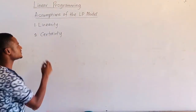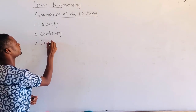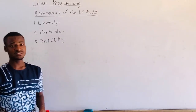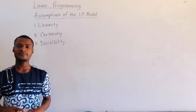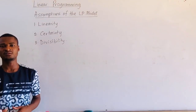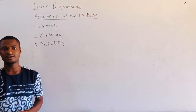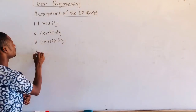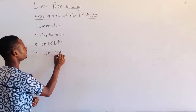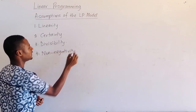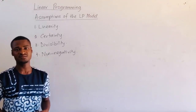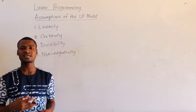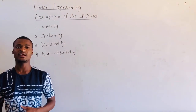The next assumption is divisibility. This assumption tells us that the decision variables in our linear programming model can take up fractional or decimal values. And the last assumption we are going to look at is non-negativity, which means that the values that the decision variables can take start from 0, 1, 2, 3, and so on.